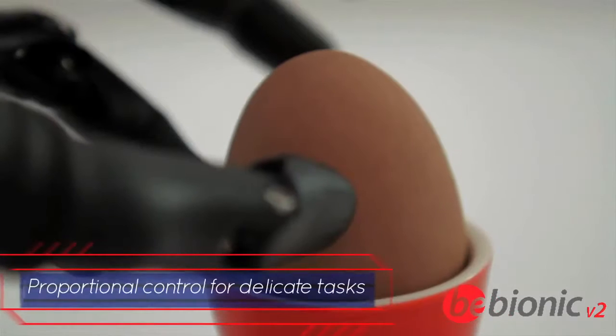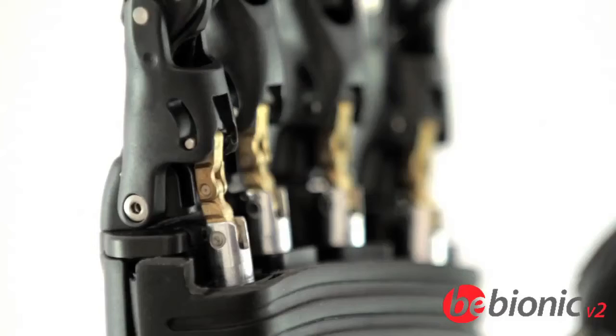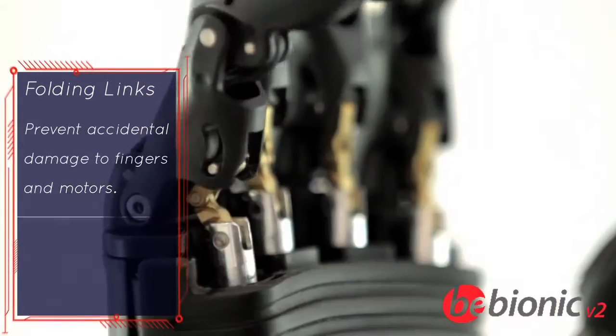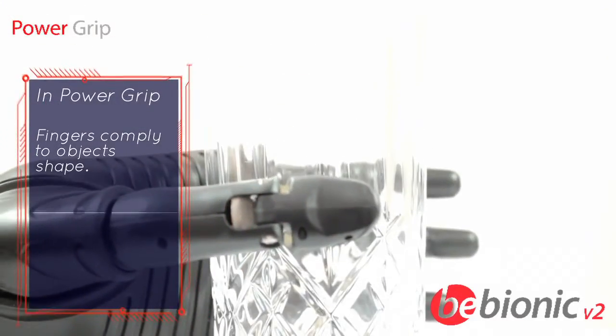With fully proportional speed control, the user can master delicate tasks such as holding an egg. Folding links allow the fingers to flex for natural function and appearance. The Bionic hand offers up to 14 grip patterns for versatility and unrivaled performance.